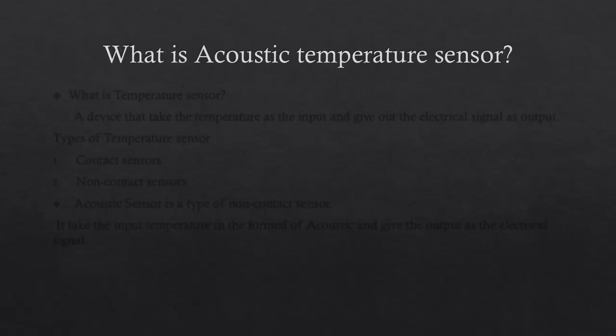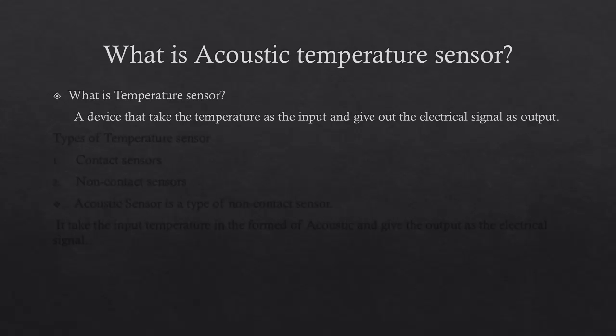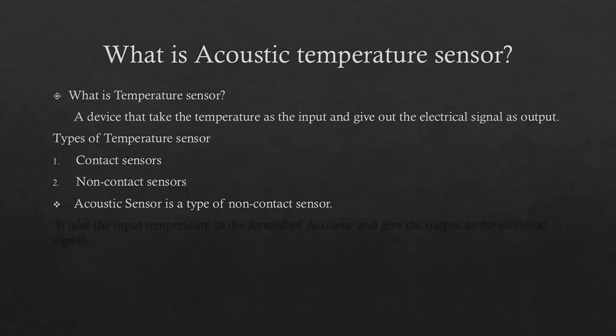What are the types of Temperature Sensor? There are two types of Temperature Sensor. First is Contact sensors, and second is Non-contact sensors. Acoustic Temperature Sensor is a type of Non-contact Sensor as it takes the input temperature in the form of Acoustic and gives the output as the electrical signal.